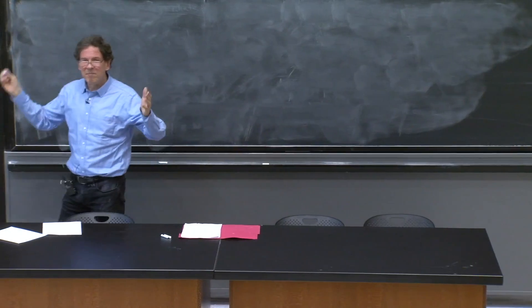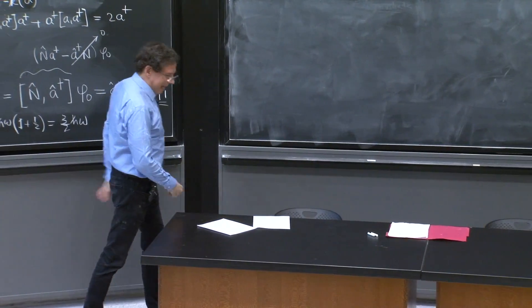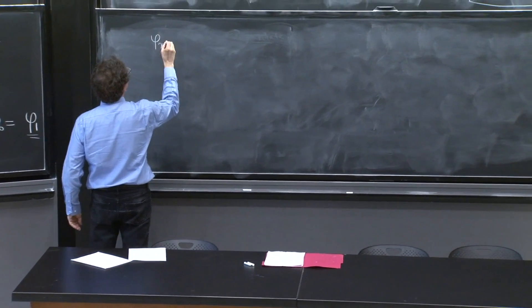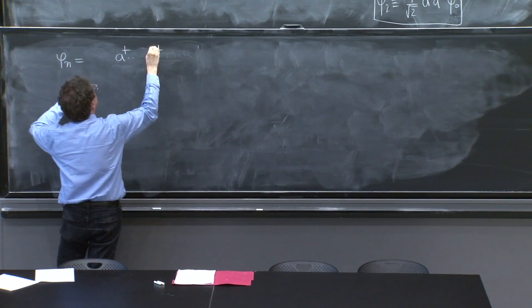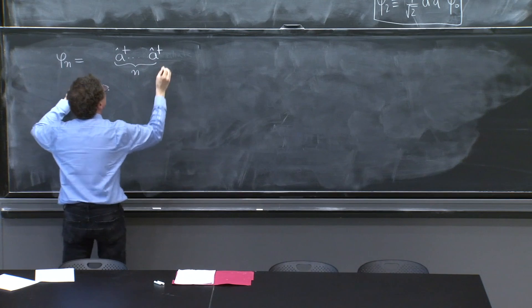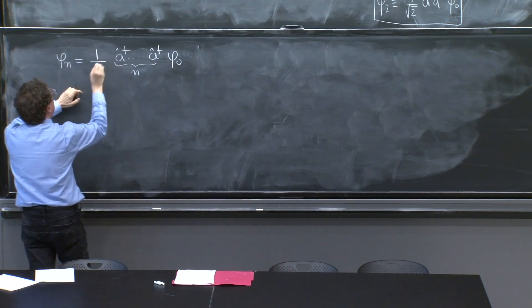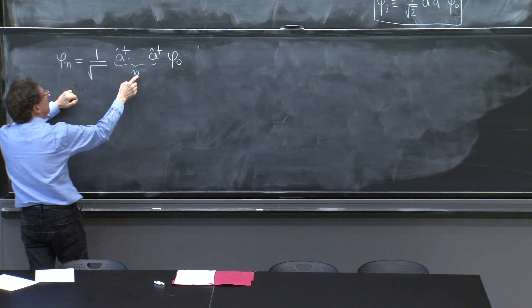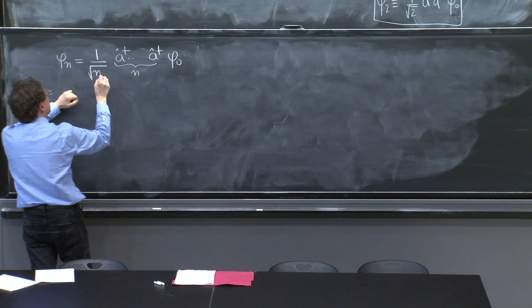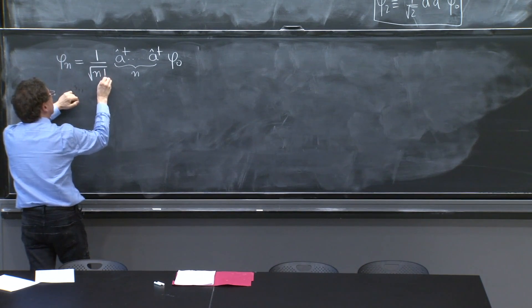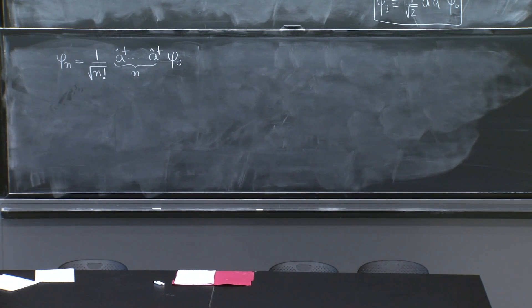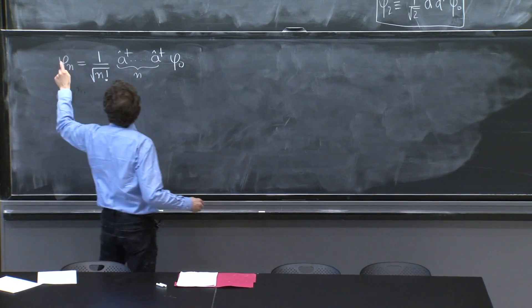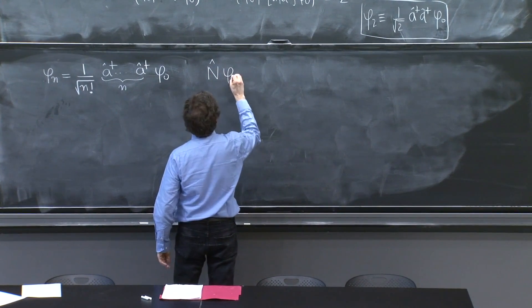So it's time to go general. The nth excited state, we claim, is given by an a dagger, a dagger n of them, acting on phi_0, with a coefficient 1 over square root of, we might think it's n, but it's actually, you can't tell. At this moment, it's n factorial. That's what you need. That is the state. And what is the number of this state? What is the number eigenvalue on phi_n?